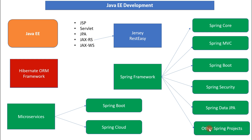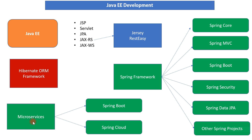There are many other Spring modules available for working with different technologies. For example, if you want to use Elasticsearch in your Spring application, you can use Spring Data Elasticsearch. If you want to work with Cassandra, you can use Spring Data Cassandra. There are many modules in the Spring ecosystem that you can leverage. Spring Framework and its modules are very popular for working with different types of applications.